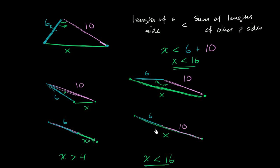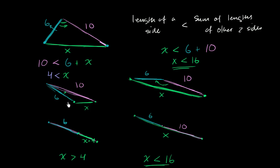That's the exact same result we got by visualizing it. To find how small x can be, you say 10 has to be less than 6 plus x — the sum of the lengths of the other two sides. If you subtract 6 from both sides, you get 4 is less than x, or x is greater than 4. It's a basic but important idea that you'll see in geometry and in other types of mathematics as other versions of the triangle inequality theorem.